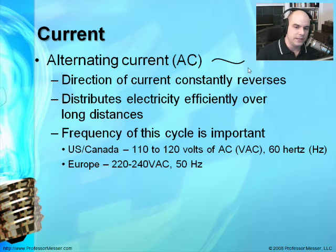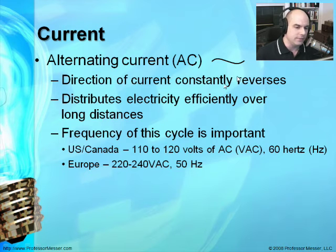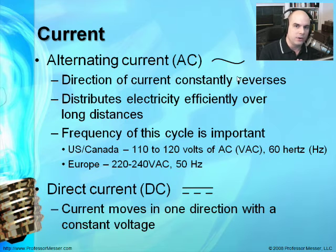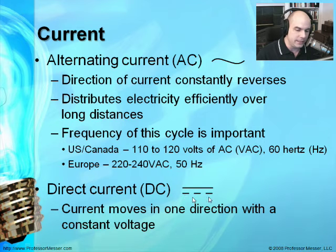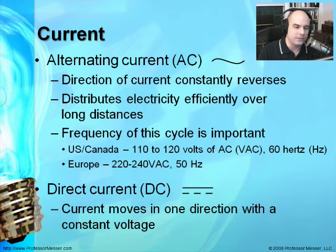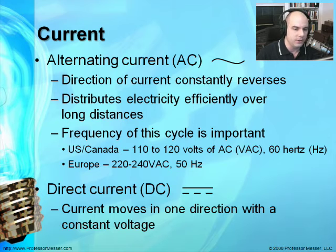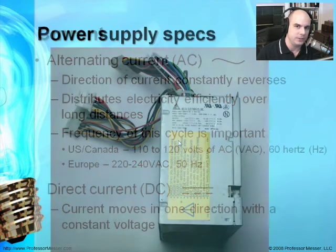Whenever you see AC, there's a symbol that looks like a wave, describing that alternating, sine-wave flow of current going back and forth. Our personal computers and many other electronics use DC, or direct current, to operate. DC is always moving in one direction — a constant voltage in one direction — which makes it easy for devices to operate. But we have to have a way to convert from AC to DC, which we'll talk about in just a moment.